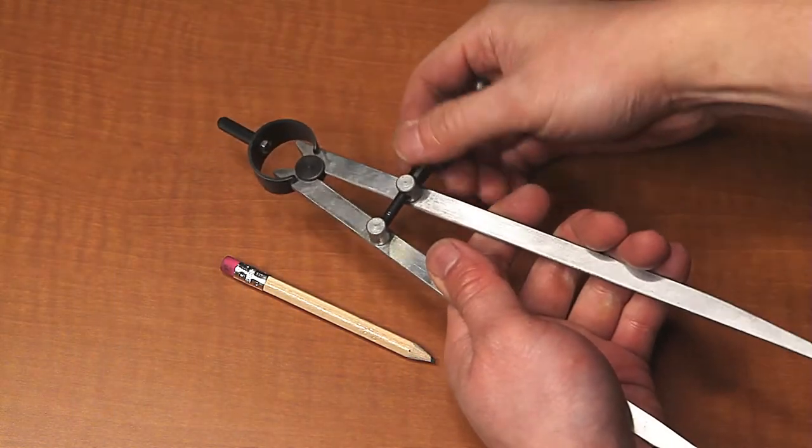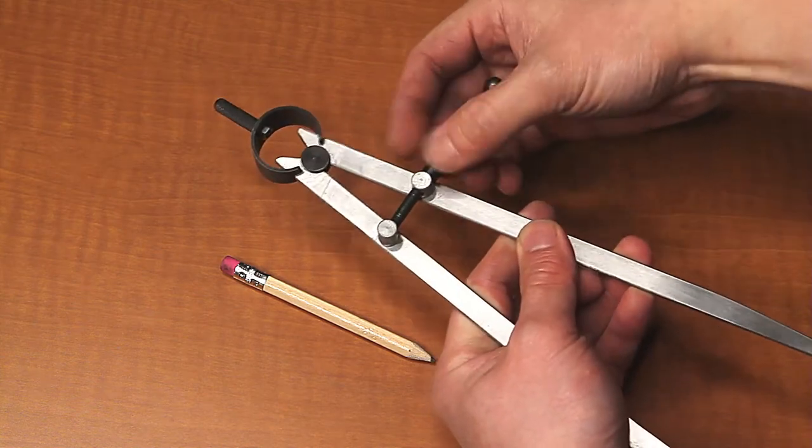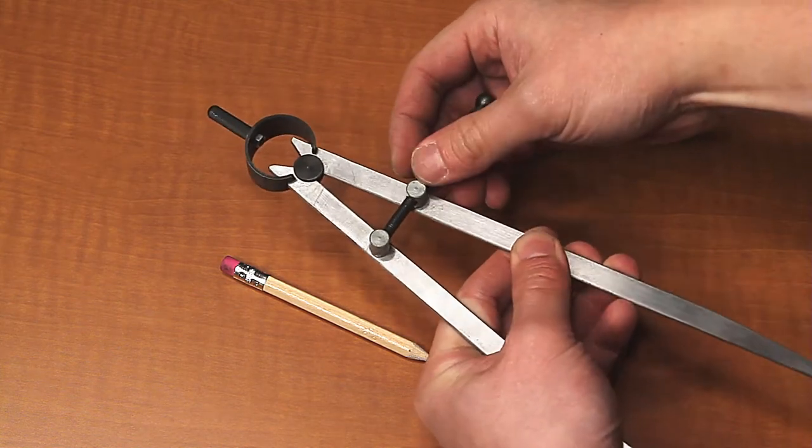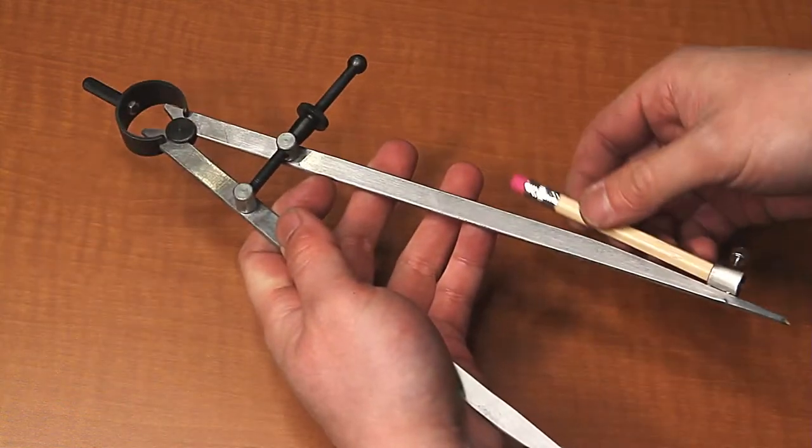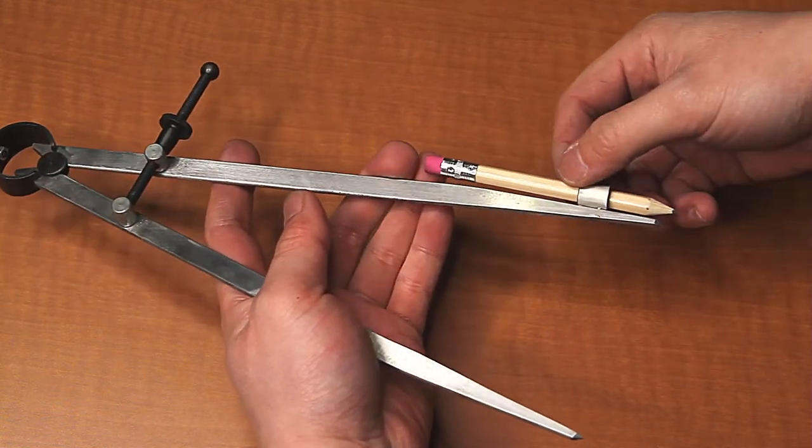To draw a circle or scribe with the spring divider, unscrew the sliding speed nut to the desired length and insert the pencil into the pencil holder.